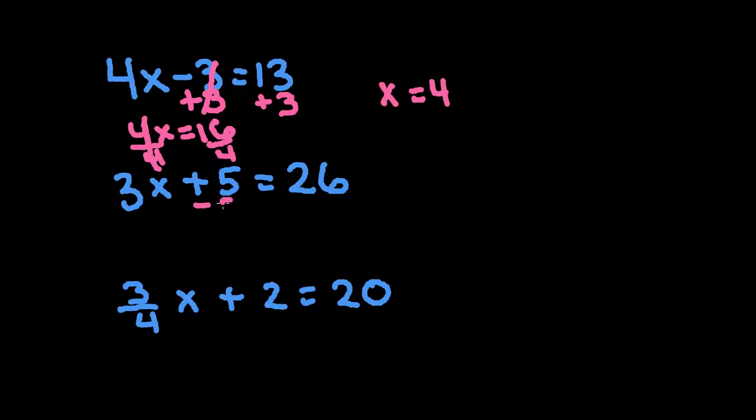On the next one, we would subtract 5. So we get 3x is equal to 5. That crosses off. So we get 3x is equal to 21. On the last one, we would divide by 3. So we get x is equal to 7.